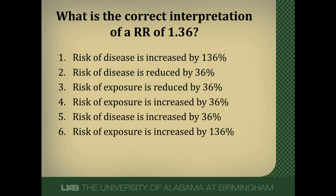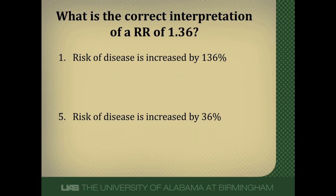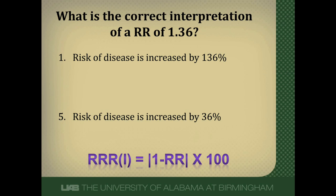A relative risk goes along with a cohort study, and cohort studies look at risk of disease, so any answer mentioning exposure can be eliminated. The relative risk is 1.36, which is greater than 1, meaning risk is increased — so any answer saying risk was reduced is also eliminated. Using the formula: relative risk increase equals the absolute value of 1 minus the relative risk, multiplied by 100. With a relative risk of 1.36, the answer is 36%: risk of disease is 36% greater in exposed persons relative to unexposed persons.